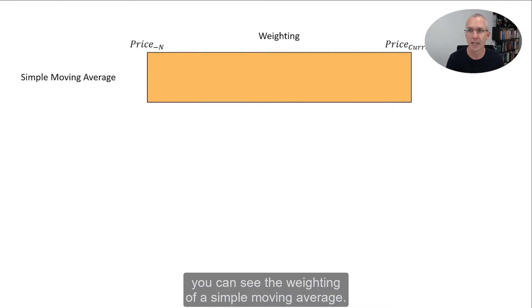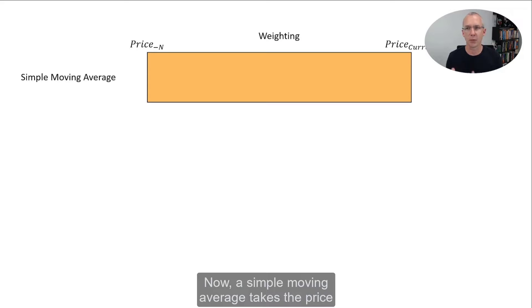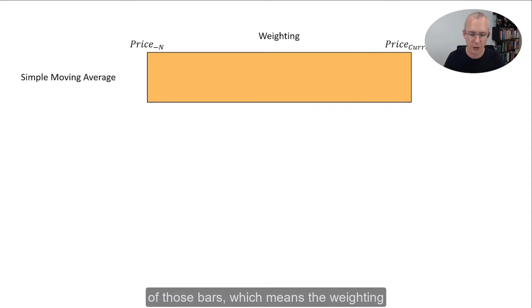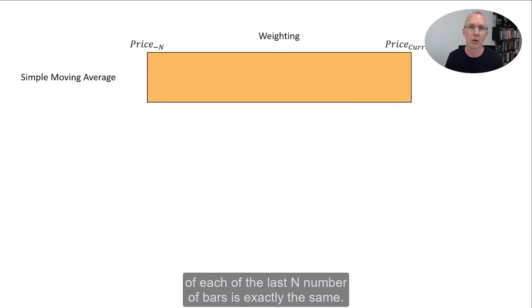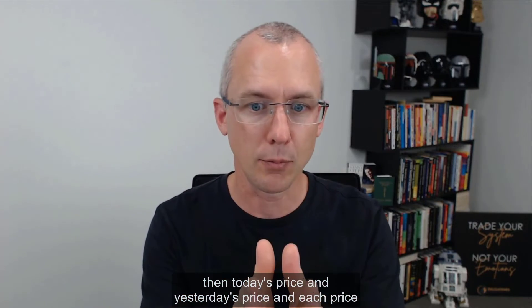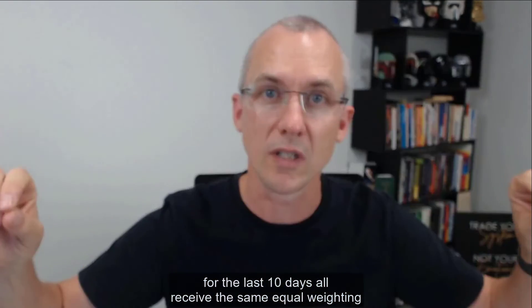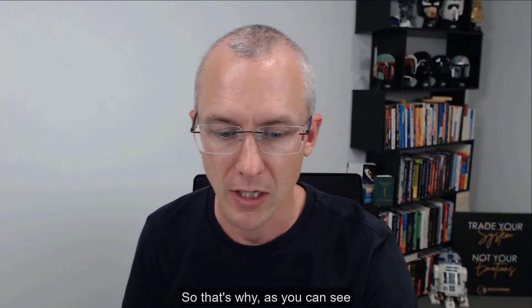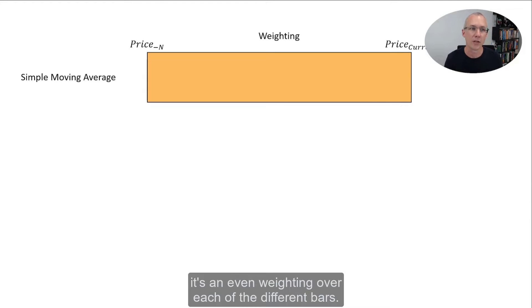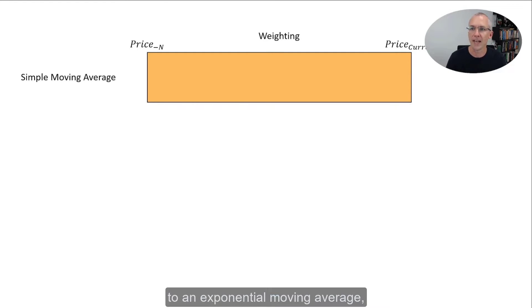On the screen in front of me, you can see the weighting of a simple moving average. A simple moving average takes the price of the last N number of bars and performs a simple average of those bars, which means the weighting of each of the last N number of bars is exactly the same. So if it's a 10-day moving average, then today's price and yesterday's price and each price for the last 10 days all receive the same equal weighting in the moving average calculation. As you can see in the simple diagram here, it's an even weighting over each of the different bars.